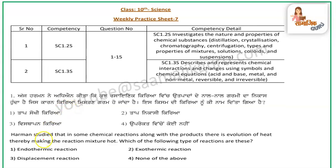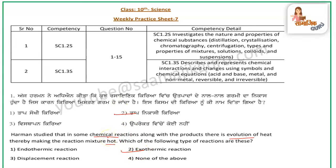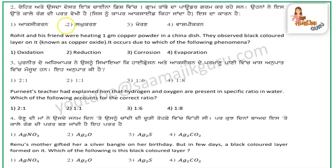The first question is: Harman studied that in some chemical reactions, along with the product, there is evolution of heat, thereby making the reaction mixture hot. When heat is released, we call it an exothermic reaction — meaning tap-nikaase-kriya — heat is basically coming out.